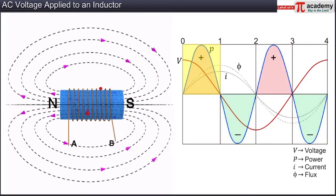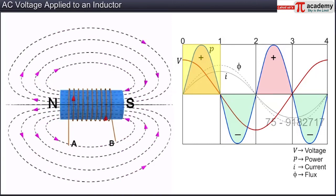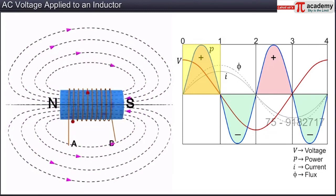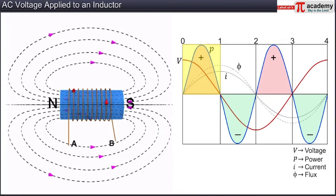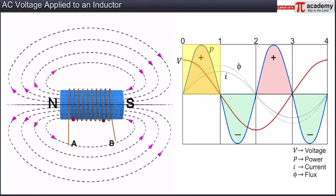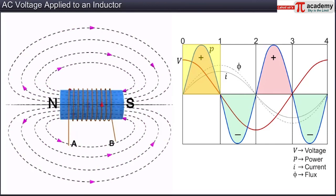In the first time interval 0-1, the value of the current keeps rising from zero and reaches its peak value at one-fourth of its time period. The flux passing through the coils changes, setting up a magnetic field as shown in the figure. The current enters the inductor coil at A and leaves at B. As the current and voltage are both positive, it means the power is positive. Positive power means the inductor is absorbing energy from the circuit.